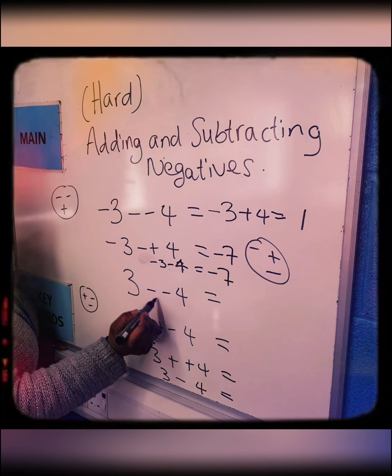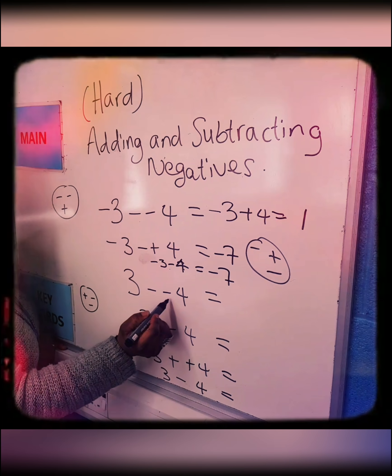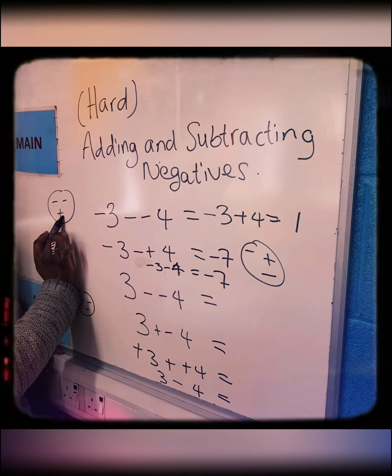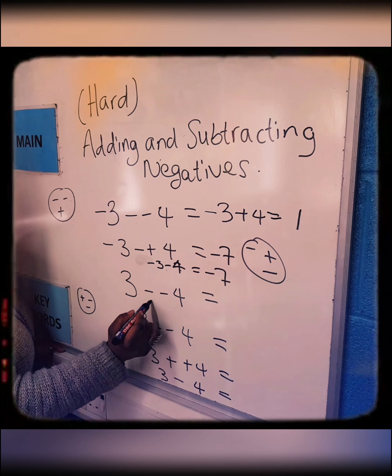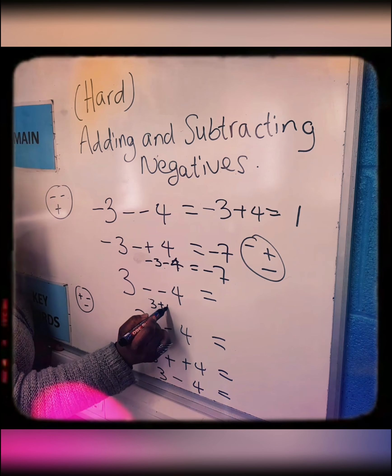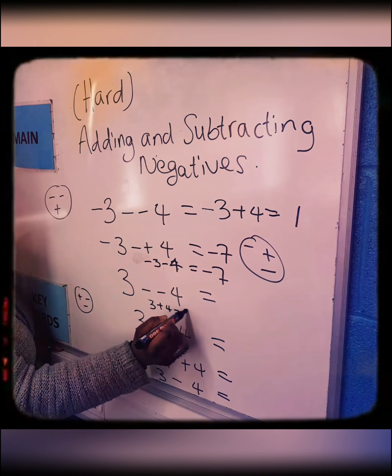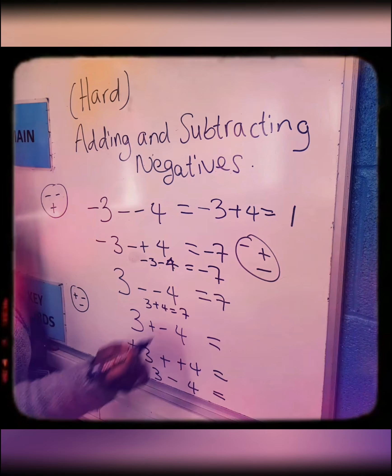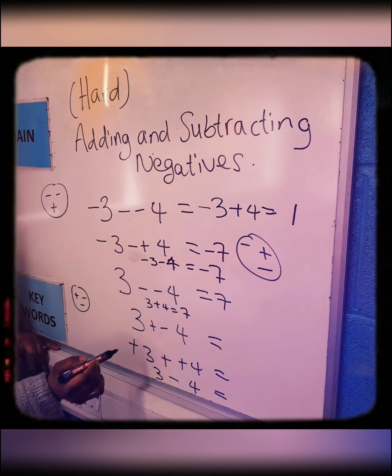Here you have two signs next to each other — it shouldn't be happening in mathematics. The two signs are the same, so you make it a positive. This becomes 3 add 4, which is 7, and the answer is 7.